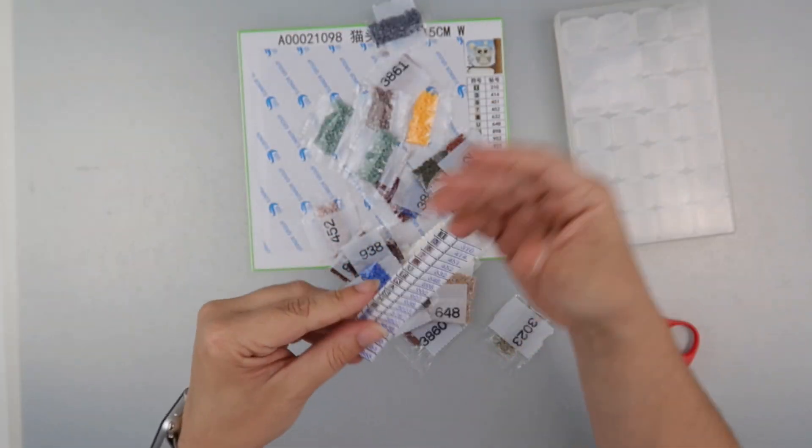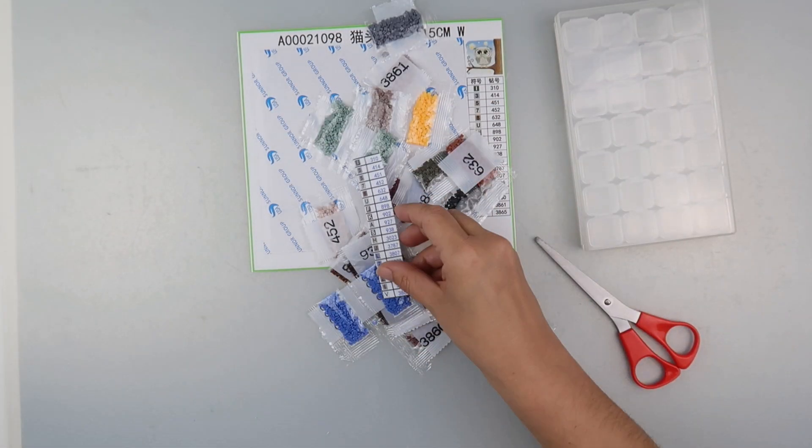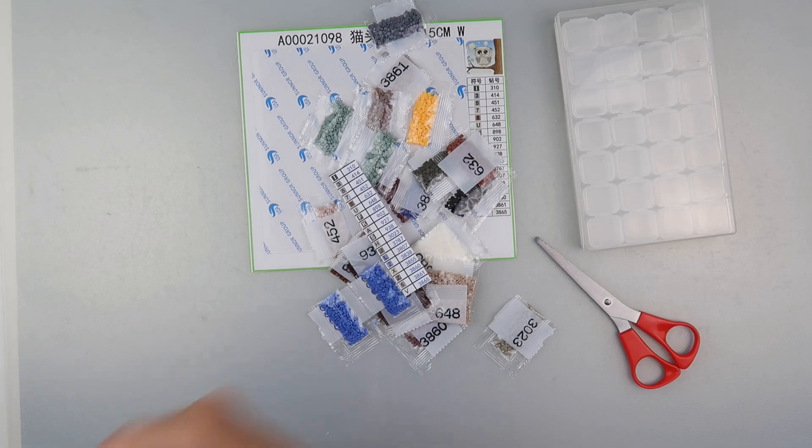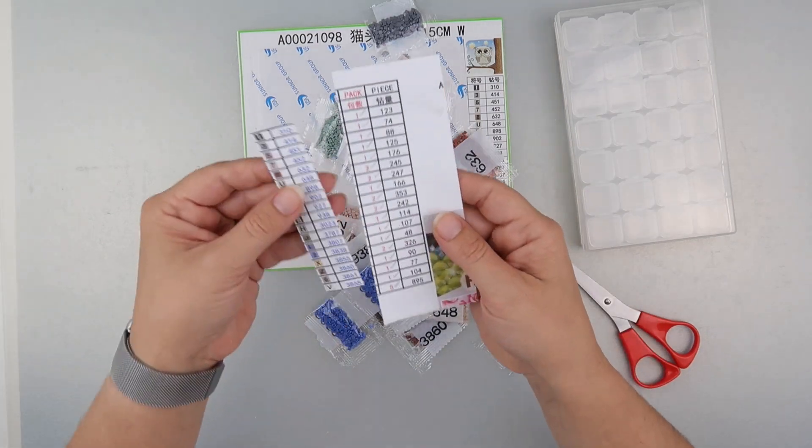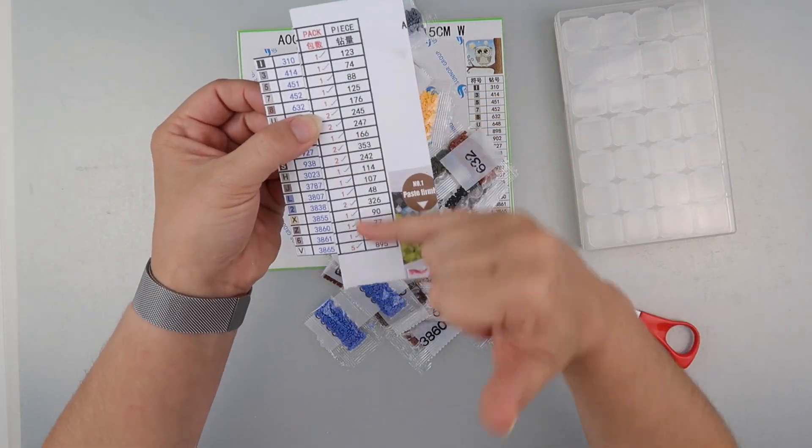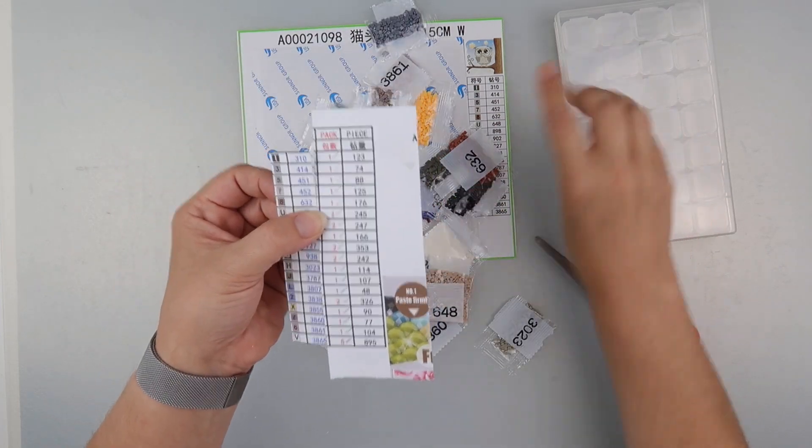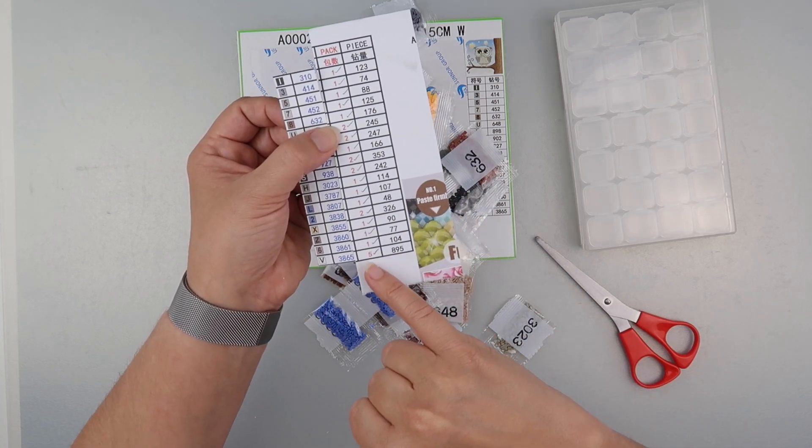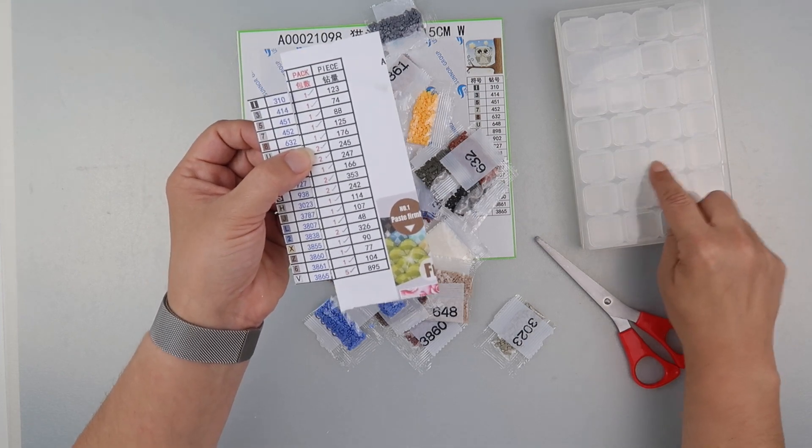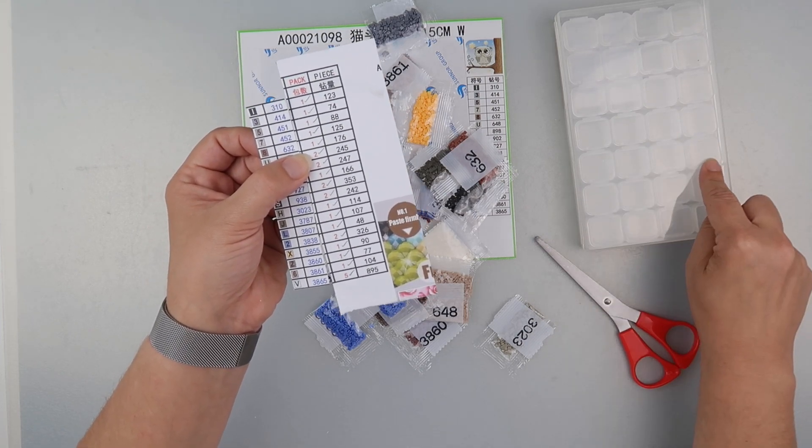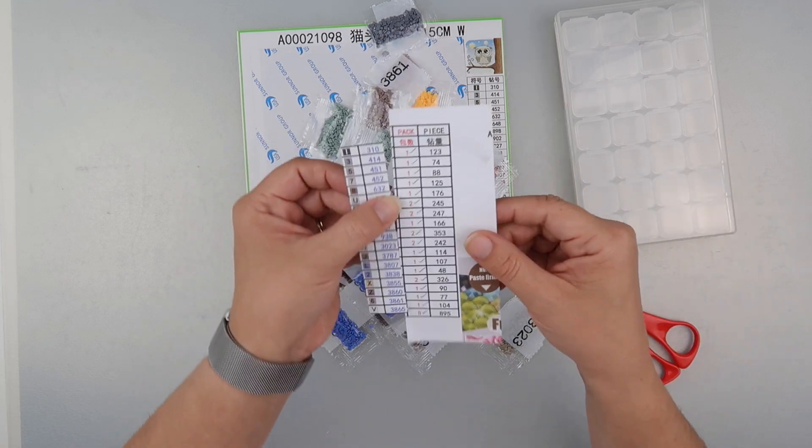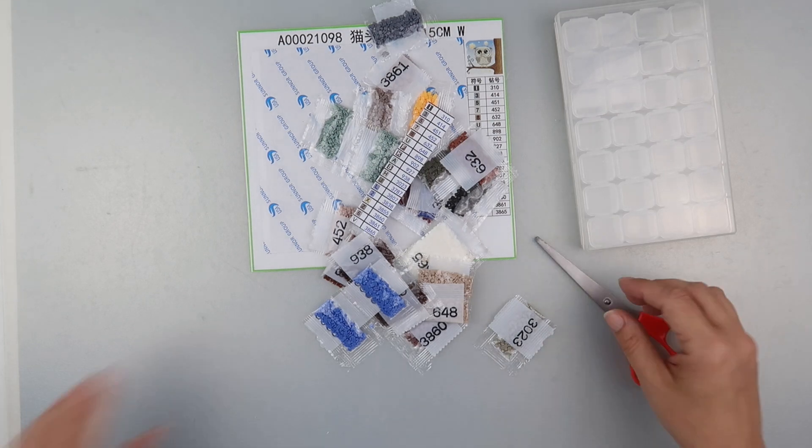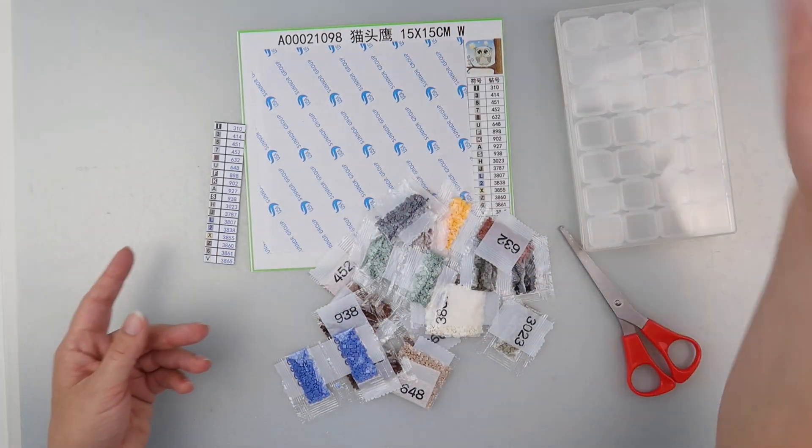One thing I do normally do when I first look is check how many packs I've got of each, because these containers will fit four packs. On 3865 there are five because it's my last number. I'm not too bothered—I'll just put the spares in whatever container is next to it. I do normally check that on video before I start, but my brain did it—it just didn't come out of my mouth.